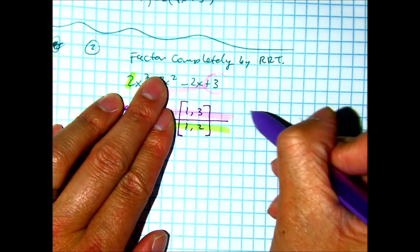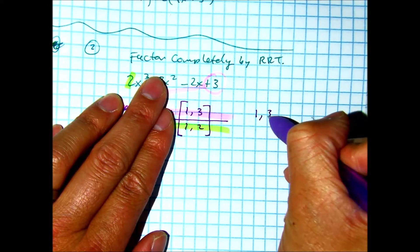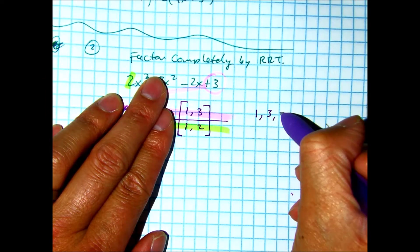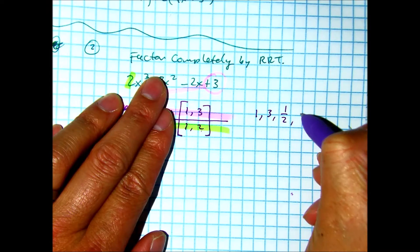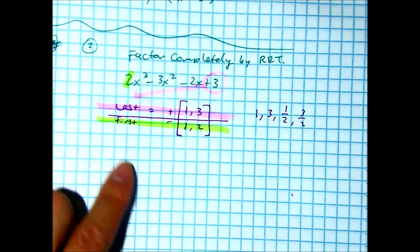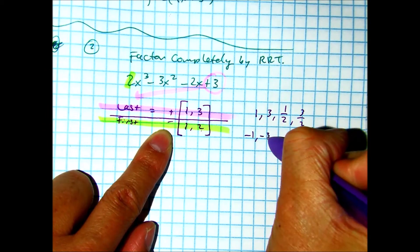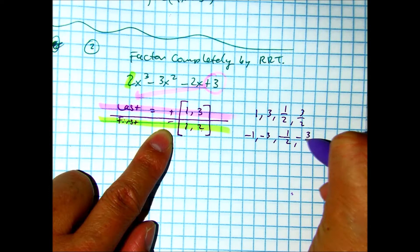And then we also have the negatives of all these numbers. So negative 1, negative 1, negative 3, negative 1 half, negative 3 halves.